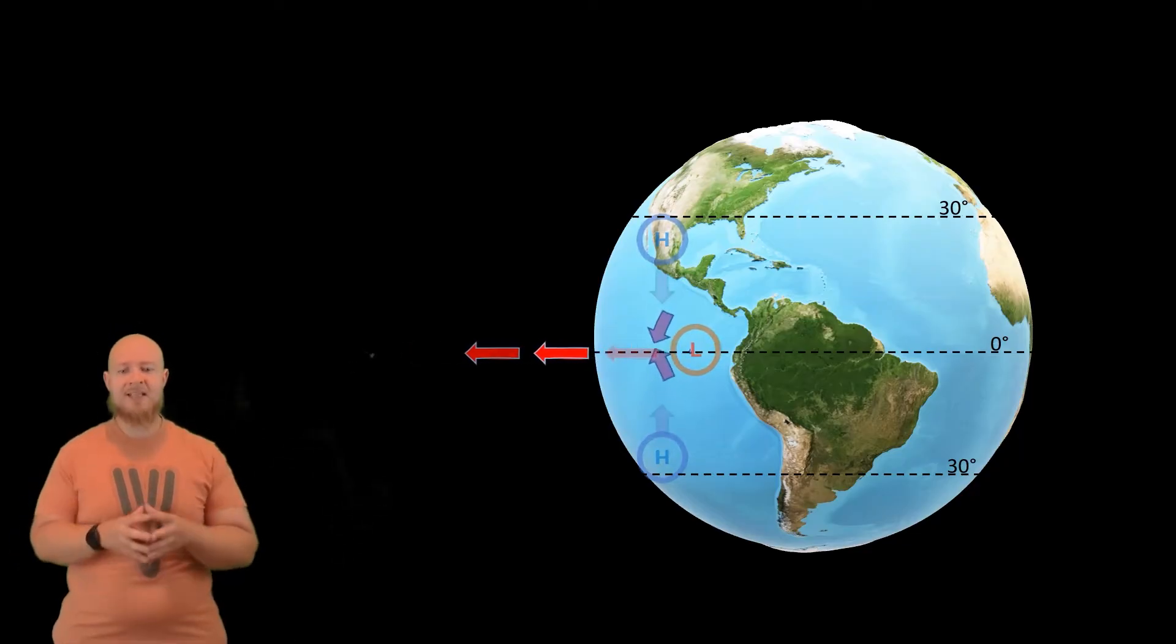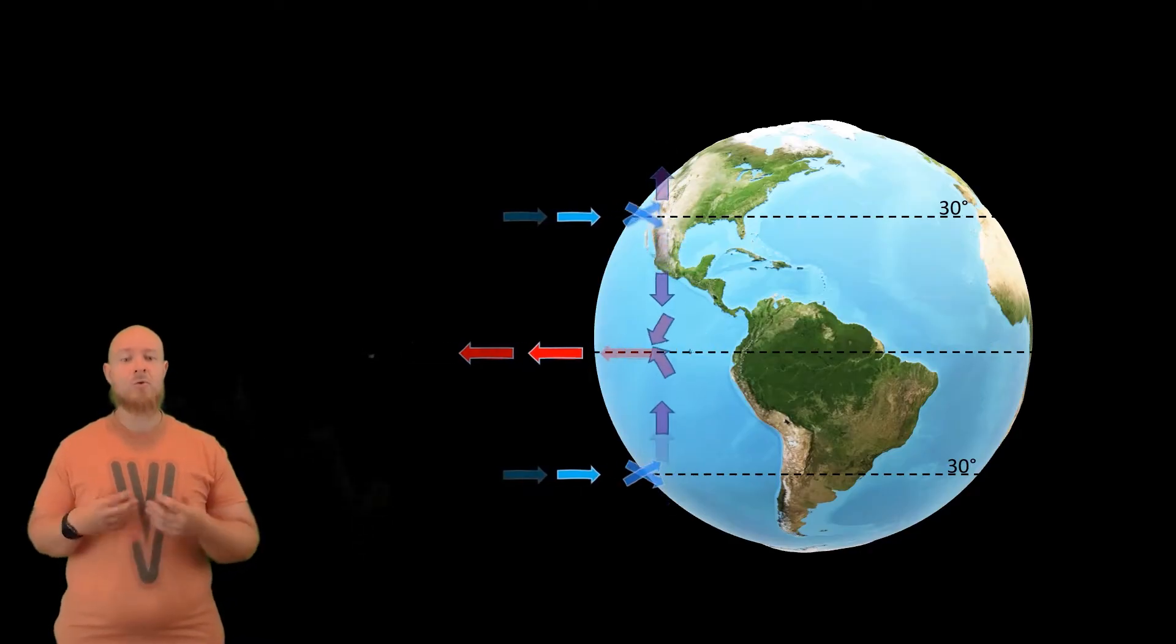The air that was rising at the equator reaches a high altitude, about 60,000 feet above the ground, which is the height of the troposphere at the equator. Here, because you're so far away from the ground, which we learned is the source of heat for the air, the air mass cools off and begins to increase in density. Now here's where that 30 degree parallel becomes important again.